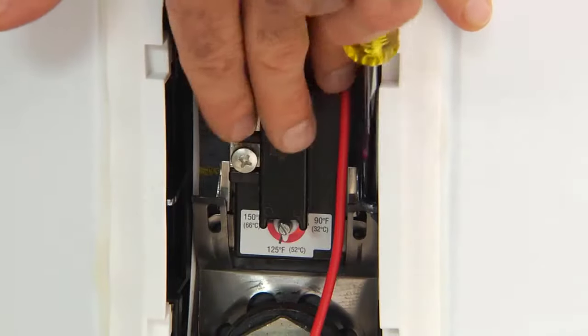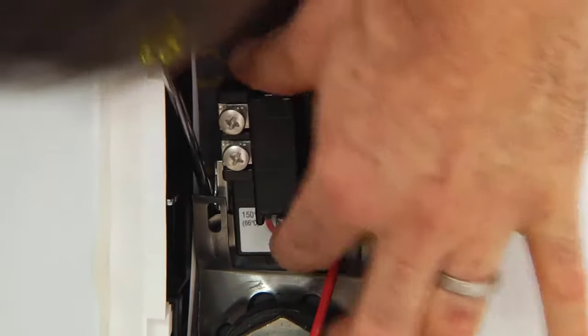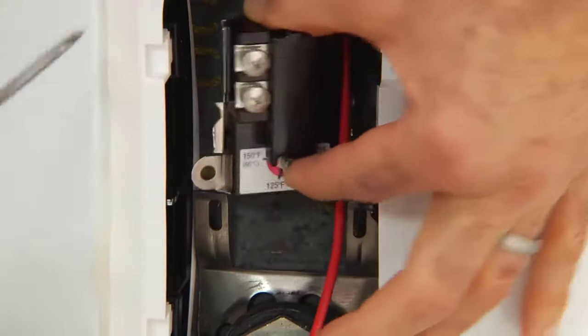Remove the thermostat by lifting it out of the retaining bracket. Be careful not to pull too hard. Breaking the retaining bracket will require the entire water heater to be replaced.